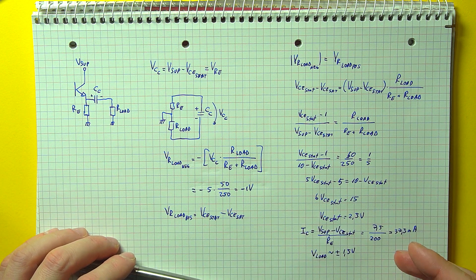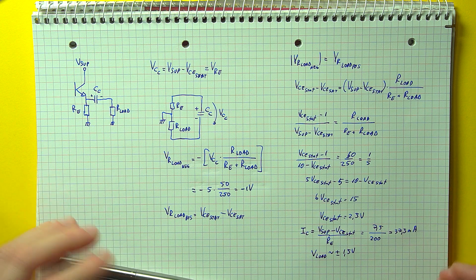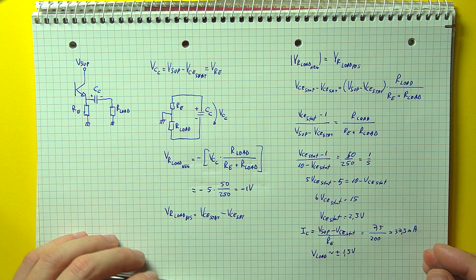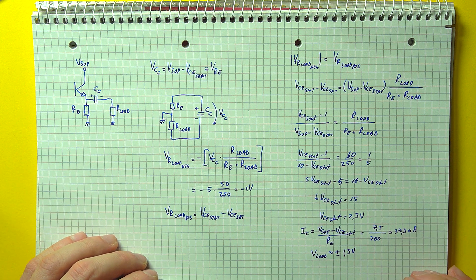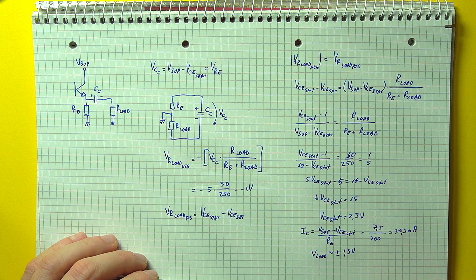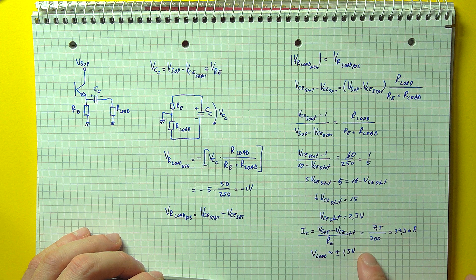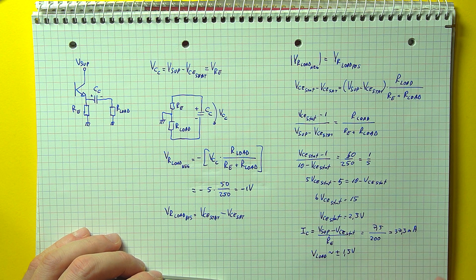This also means our collector current will be about 37.5 milliamps, slightly higher than before, but let's say it's okay. But this also means that we should be getting a slightly better output voltage swing at about plus minus 1.5 volts.